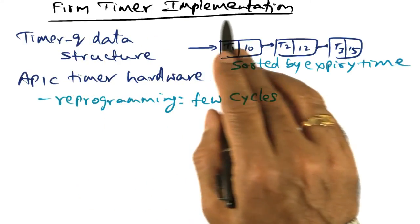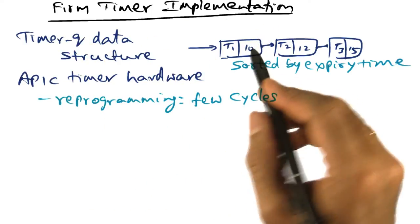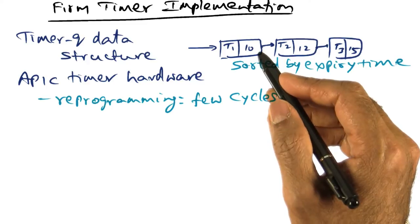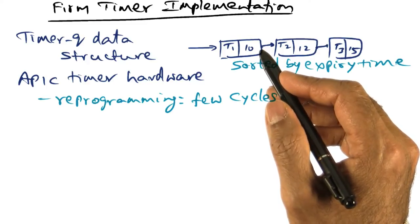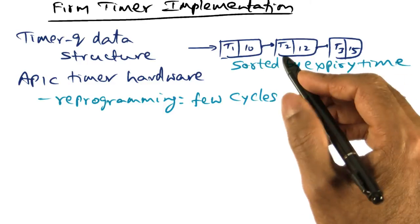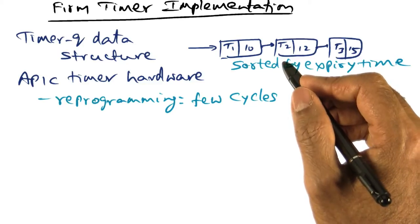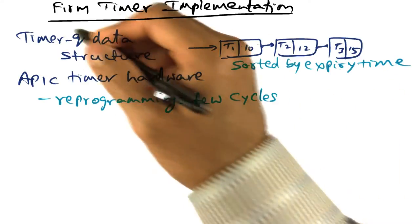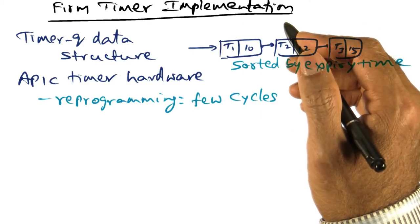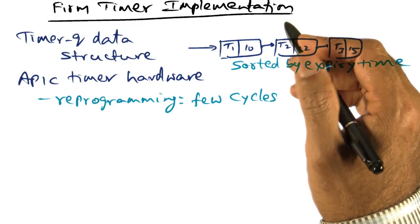The basis for firm timer implementation is the availability of APIC hardware. APIC is advanced programmable interrupt controller, which is implemented on chip in modern CPUs starting from Intel Pentium onwards. The firm timer implementation in TS Linux takes advantage of the APIC hardware.